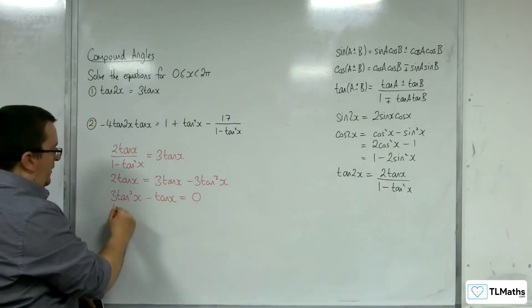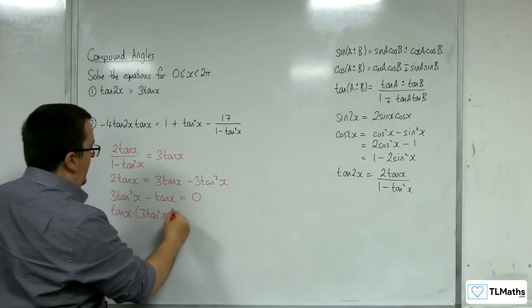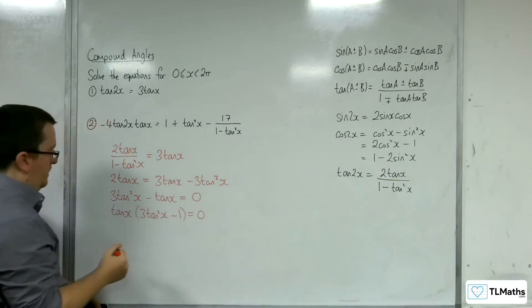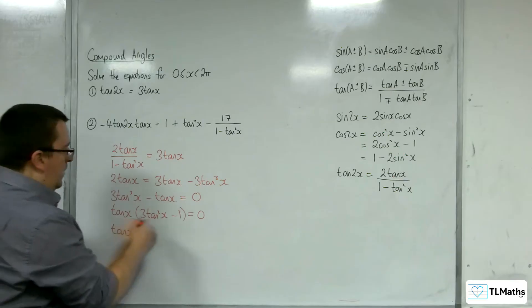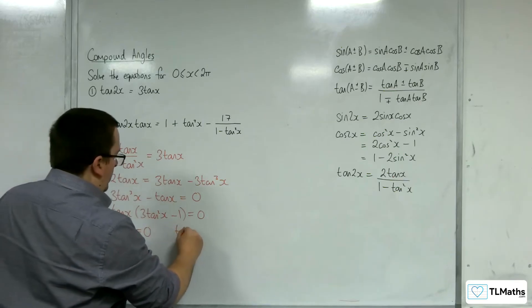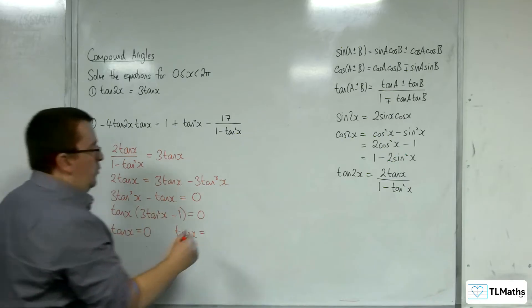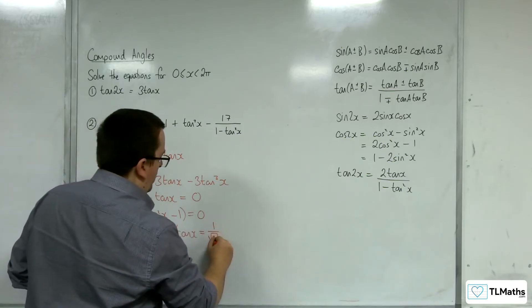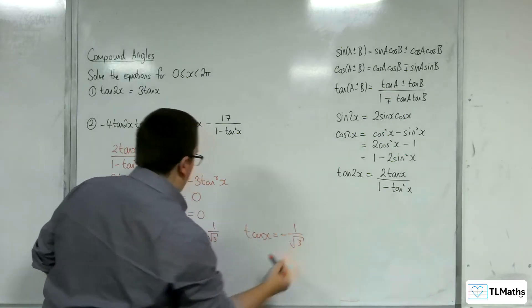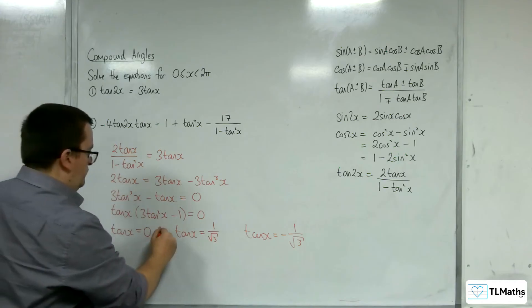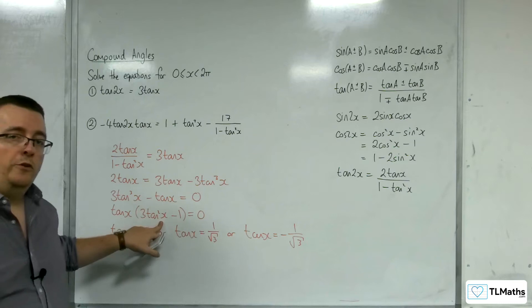We can factor tan x out and have 3 tan squared x take away 1 inside the bracket. So either tan x is equal to 0, or tan x is equal to 1 over root 3, or tan x is equal to negative 1 over root 3. Those come from solving that equation.